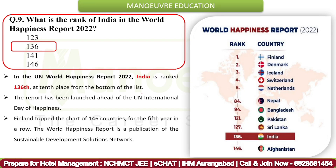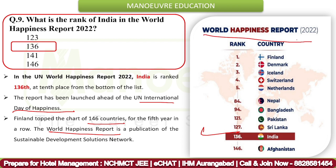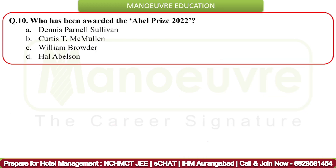Next question: What is the rank of India in the World Happiness Report 2022? The correct answer is 136. In the United Nations World Happiness Report 2022, India is ranked 136th, at the 10th place from the bottom of the list. The report was launched ahead of the UN International Day of Happiness. Finland topped the chart of 146 countries for the fifth year in a row. The World Happiness Report is a publication of the Sustainable Development Solutions Network.